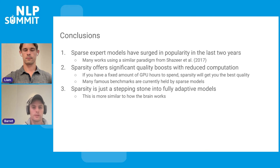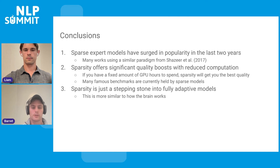To conclude: sparse expert models have really surged in popularity over the last two years. Sparsity offers significant quality boosts with reduced computation — for a fixed amount of GPU hours, sparsity will get you the best quality. Many famous benchmarks are currently held by sparse models. And we think sparsity is just a stepping stone into having fully adaptive models. Thank you.